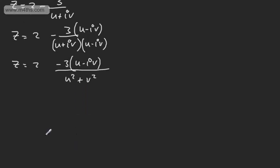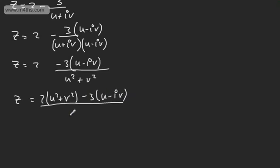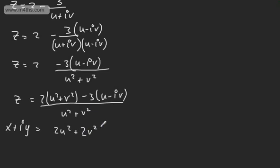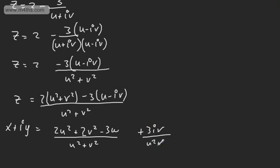I'm now going to combine the fractions. We've got 2 times U squared plus V squared minus 3 lots of U minus iV, all over the common denominator U squared plus V squared. We know Z can be written as X plus iY, so collecting real and imaginary parts: X equals 2U squared plus 2V squared minus 3U, all over U squared plus V squared. And Y equals 3V over U squared plus V squared.